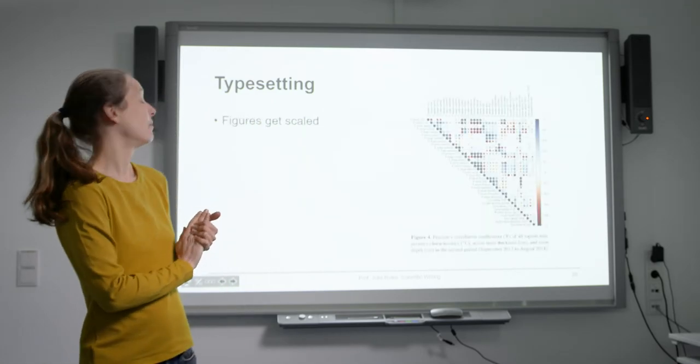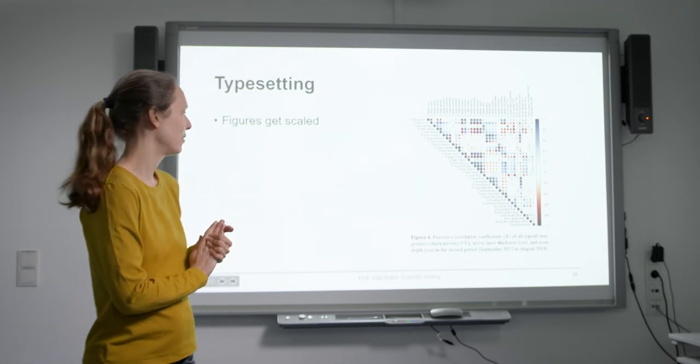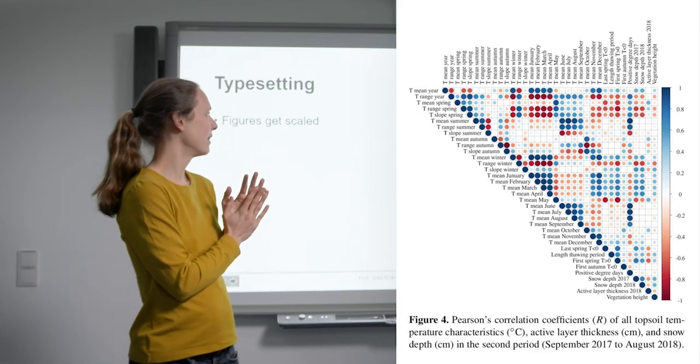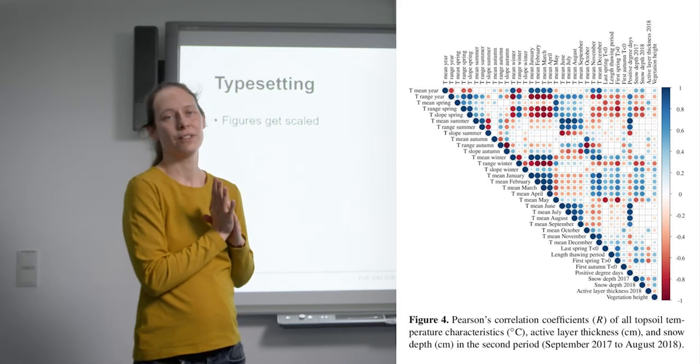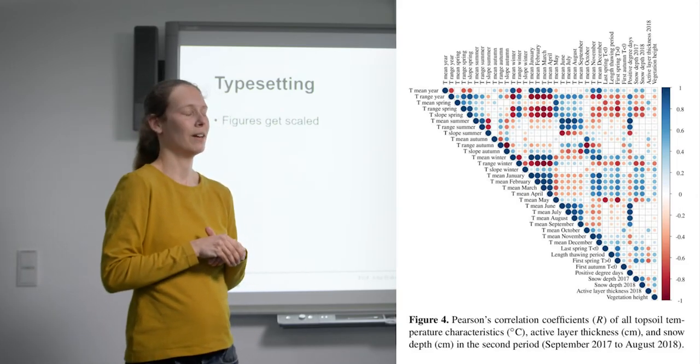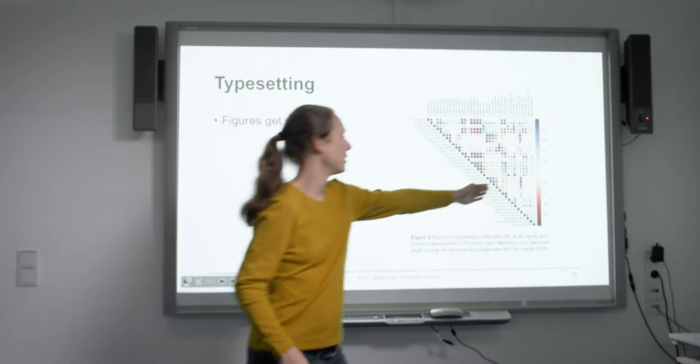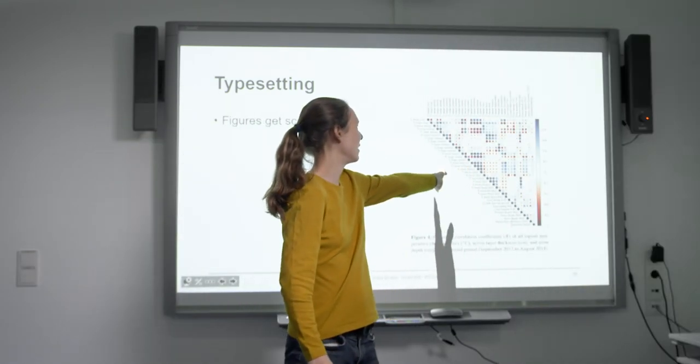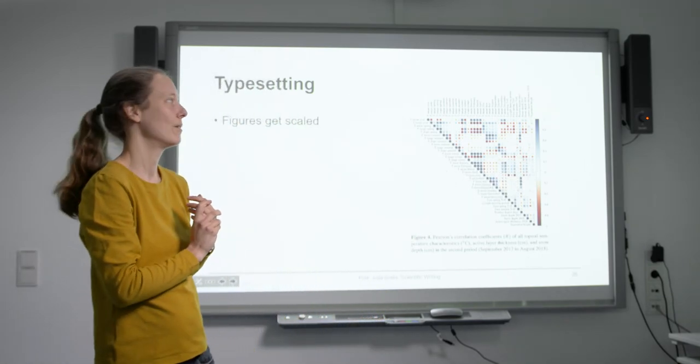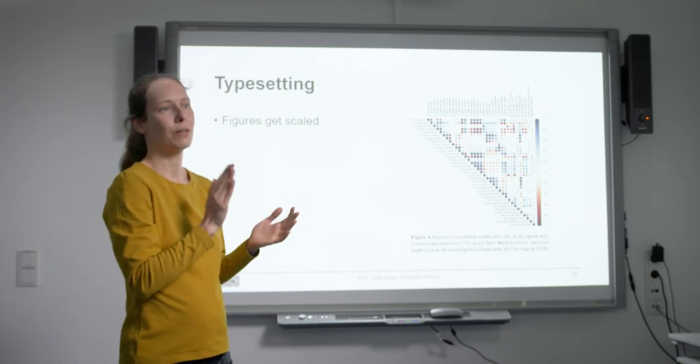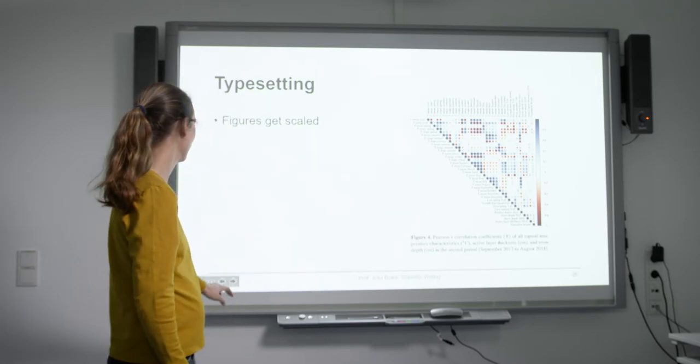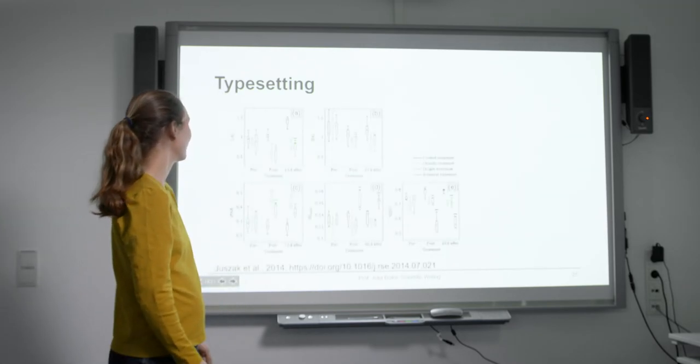Then another thing again about figures - they get scaled. This figure I intended for two columns and they scaled it to one. And as you see, the fonts are tiny, barely readable. So I had to go back, change my original figure, put the scale somewhere here so I would be able to make it at least a little bit wider and make the fonts bigger. Really go back and look at all your figures to make sure they are in the way you wanted them to be.